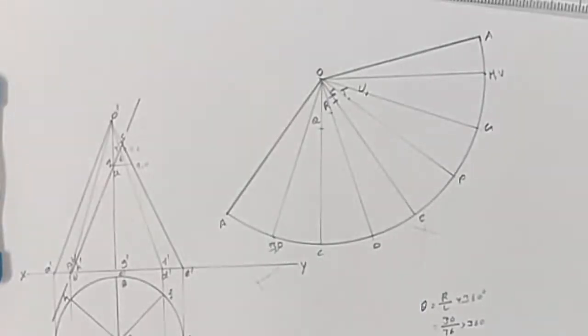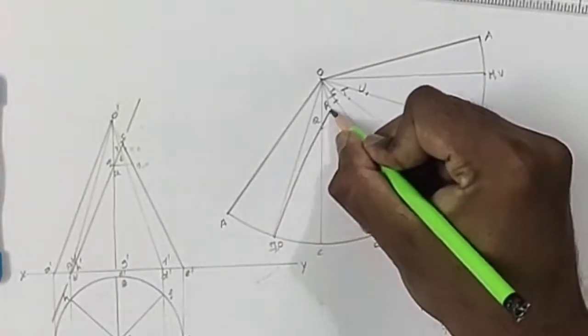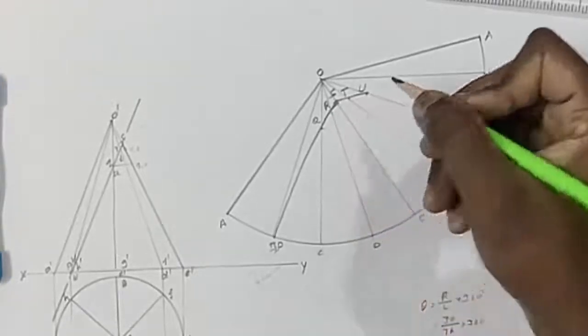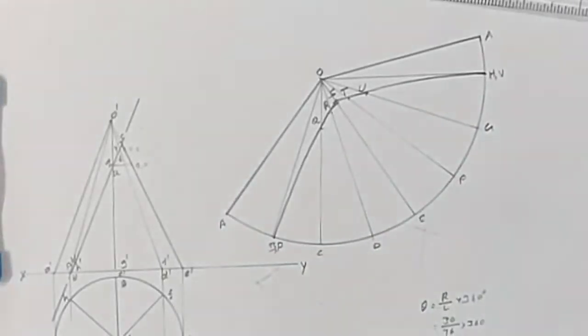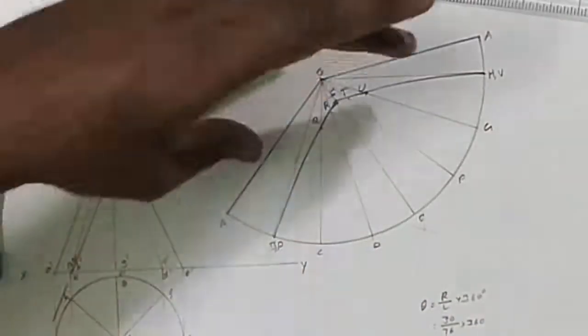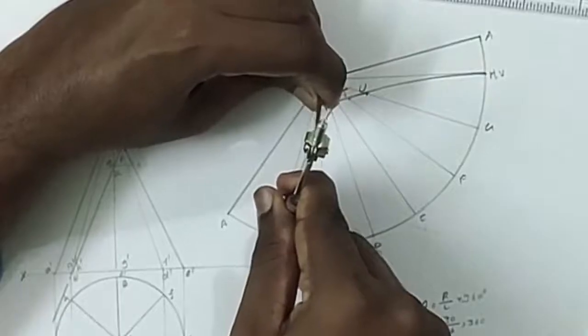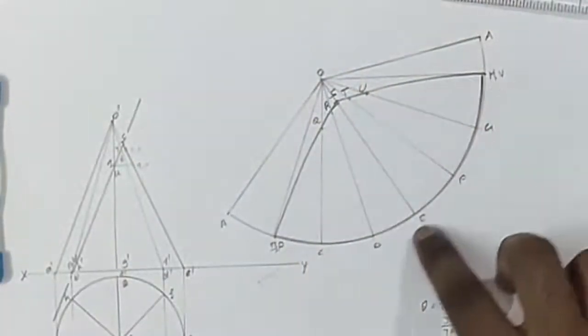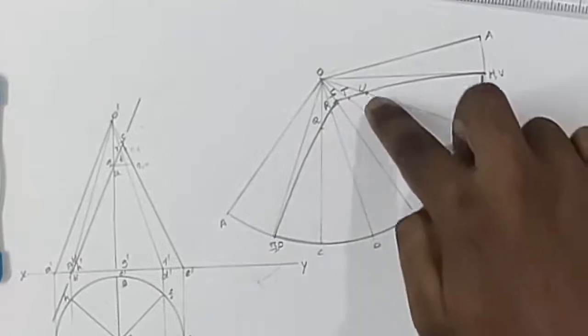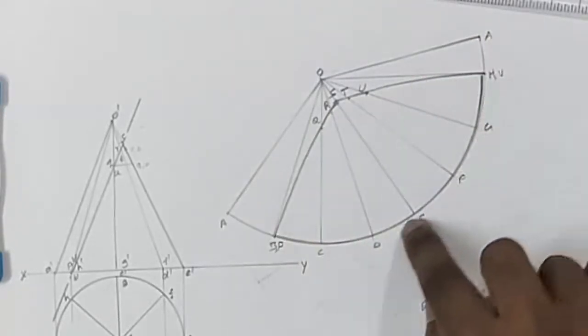Now we have to connect all those points using smooth lines. In cones and cylinders, we should not use a scale for connecting the lines. Here this line should be smooth. And this is the retained portion. This portion is removed. So let us darken the retained portion only. Only this portion should be in the outline, the outer surface. These generators need not be darkened because these are imaginary generators. These generators should be left as thin lines.